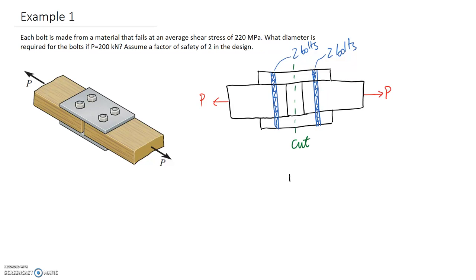If I just redraw the free body diagram of the right hand side, we have two bolts going through the center still. We have the force P acting externally, and through the cut we're going to replace it with the internal loads, one here and one here. Because it's symmetrical, we would expect that half of this P load would be taken by each one. So this is P/2 and this is P/2.